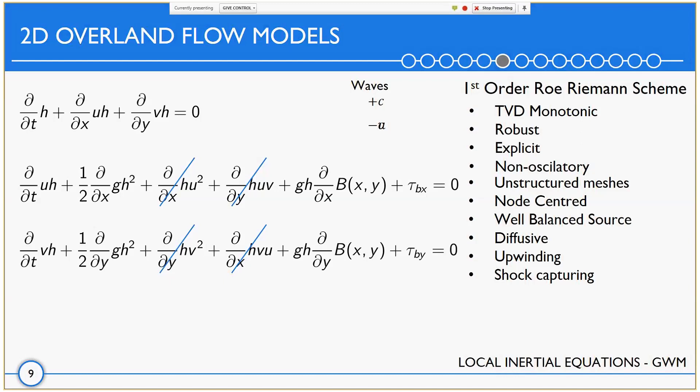The local inertial equations, or the gravity wave model, neglects the convective terms and keeps all the other terms. Therefore, it has a different wave speed, which is plus the celerity and minus the celerity in a 1D case. The numerical scheme is the same as used for the shallow water equations, but adapted to the different equations.